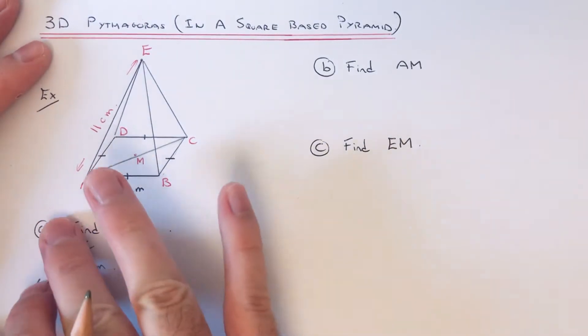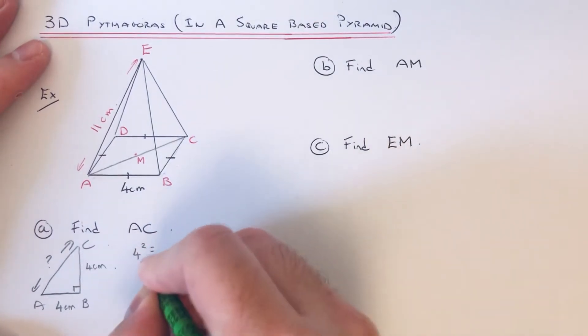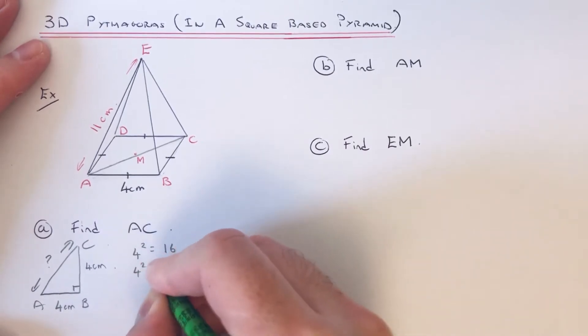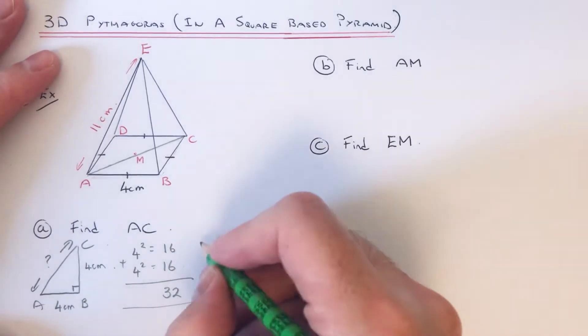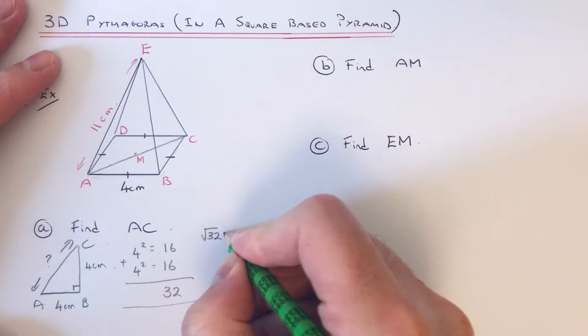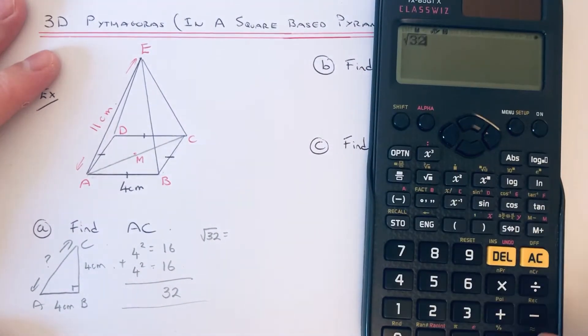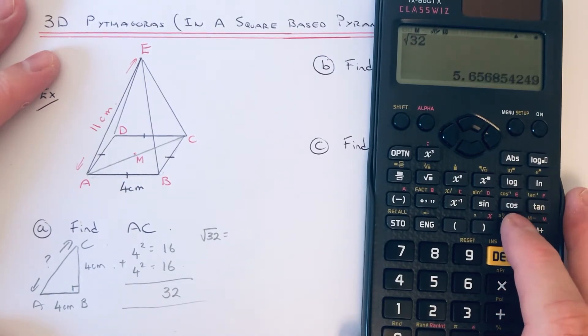So if we square: 4 squared is 16, and our other side is 4 squared, which is also 16. We're going to add these together because we're after the longest side. So that's 32, and then we're going to square root it.